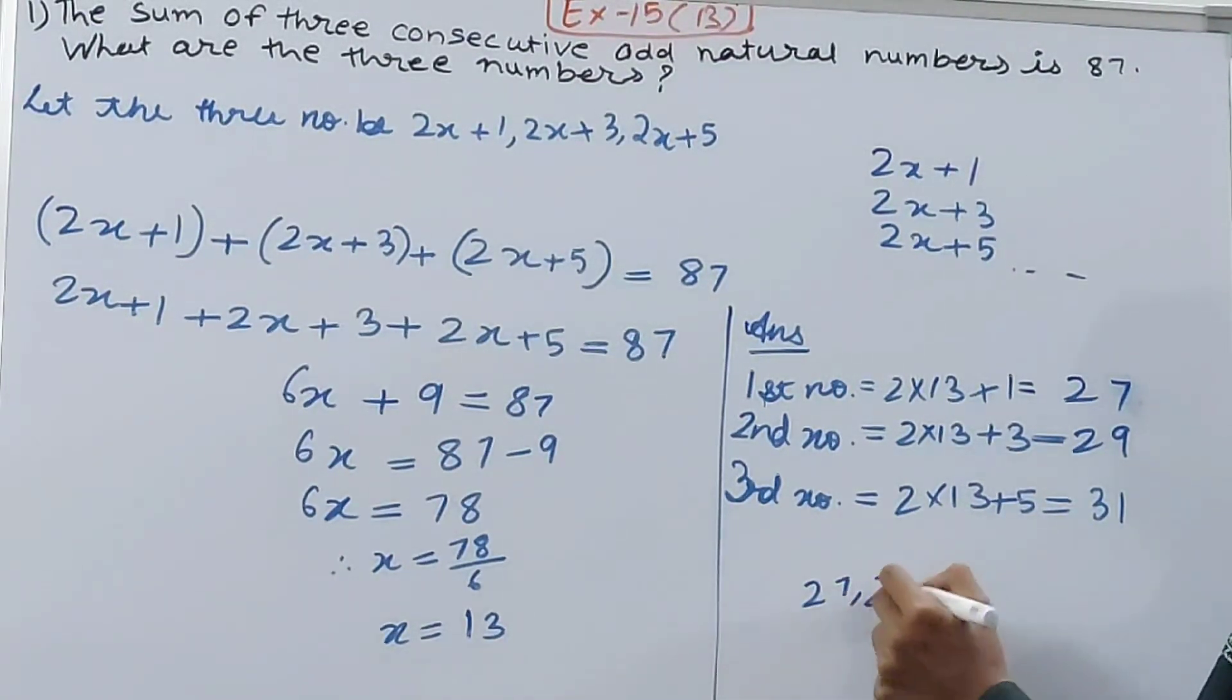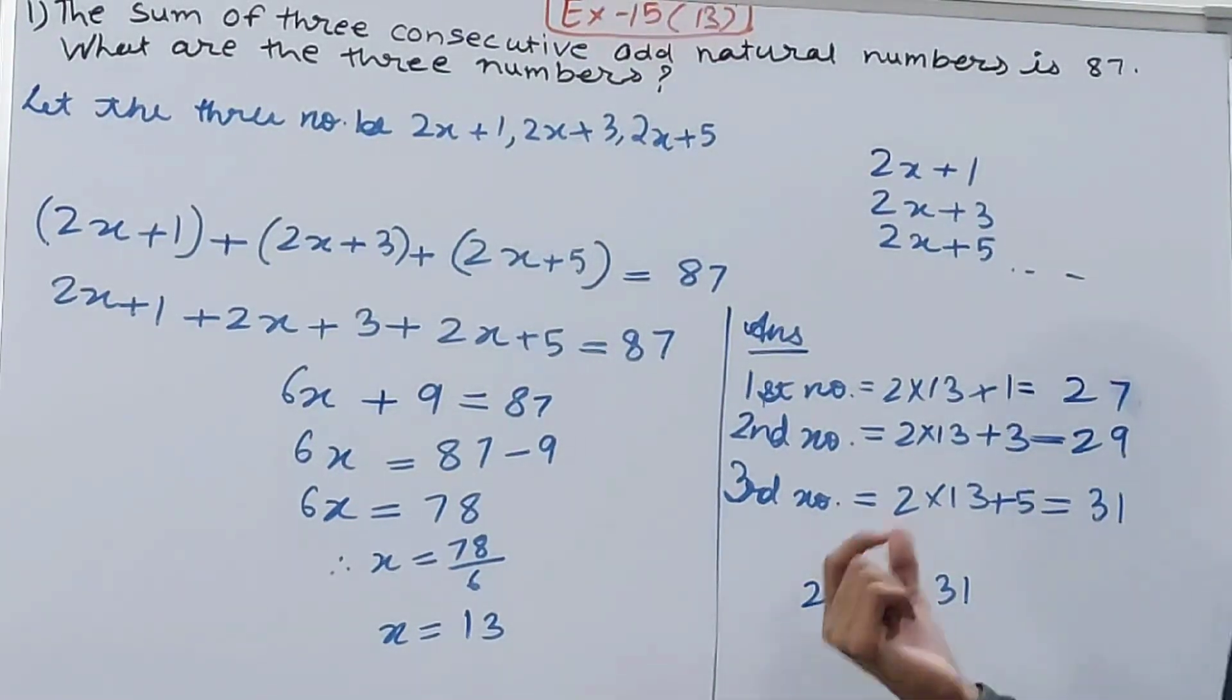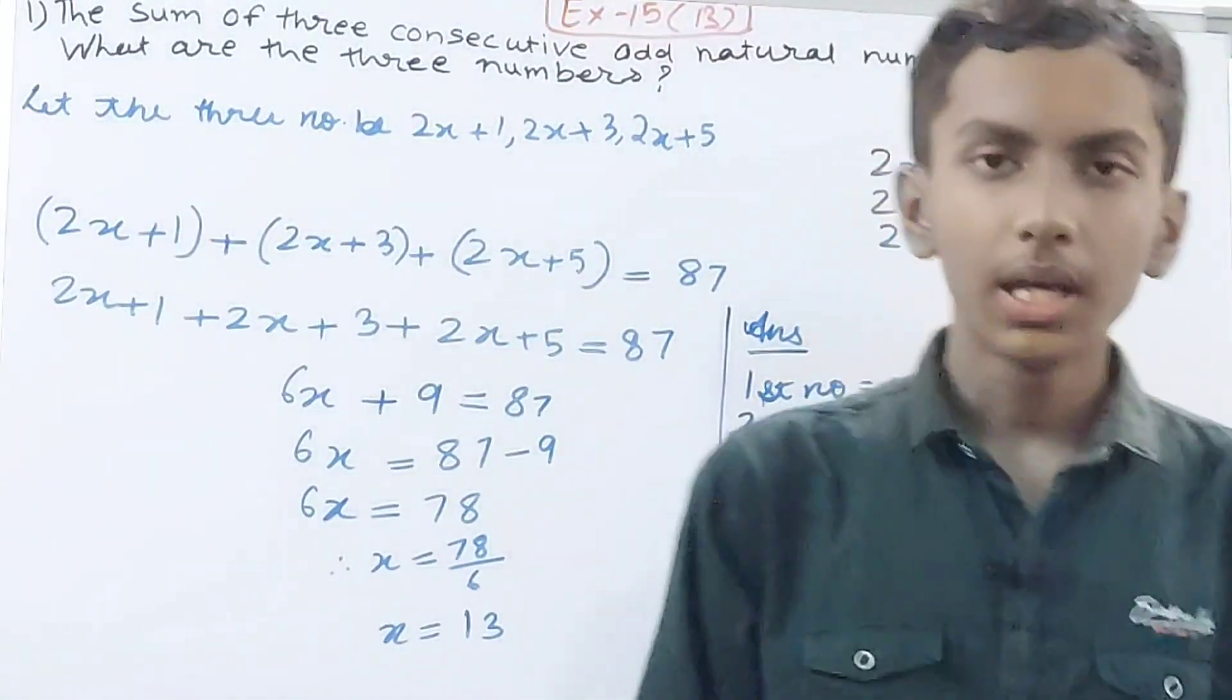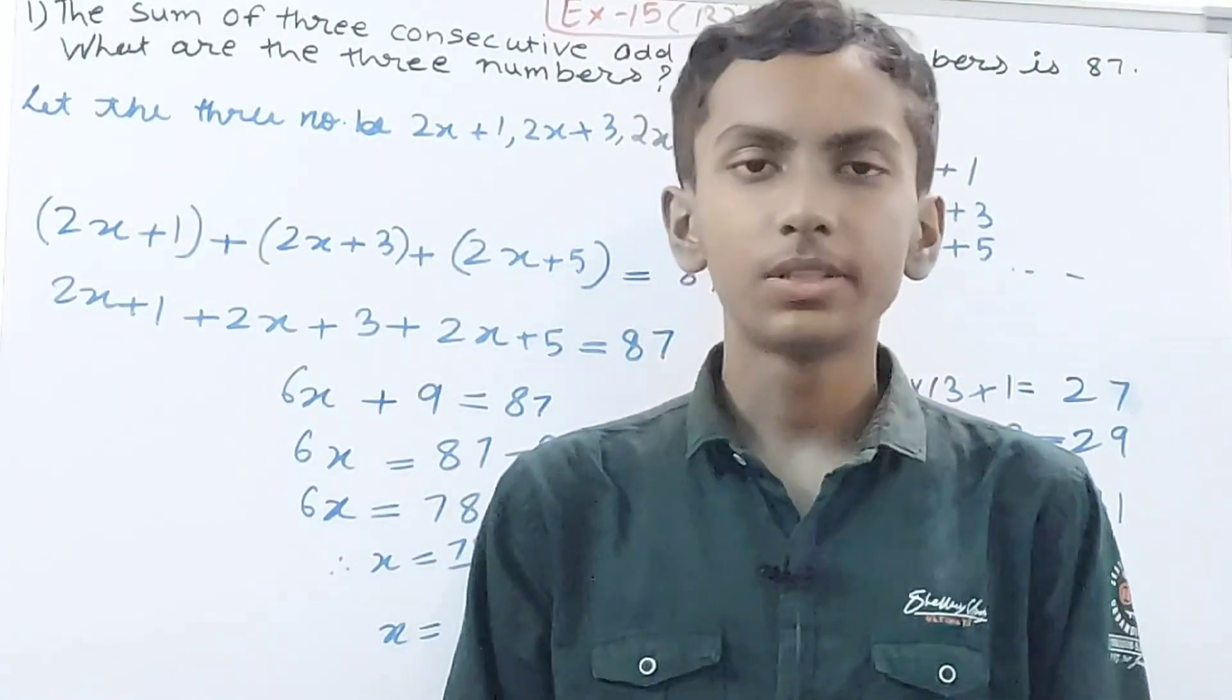You can see the consecutive numbers: after 27 the next odd number is 29, after 29 the next odd number is 31. And their sum is 87.